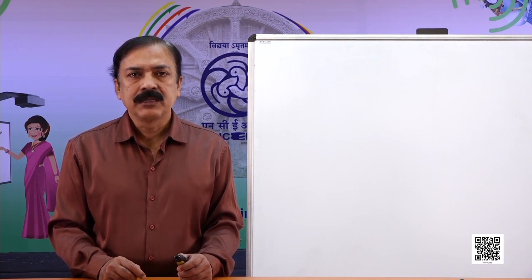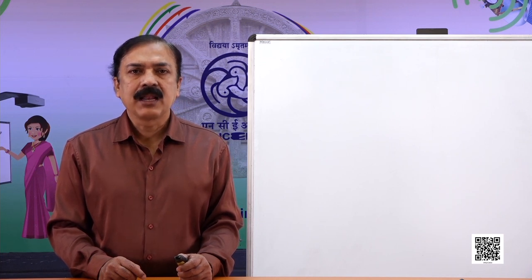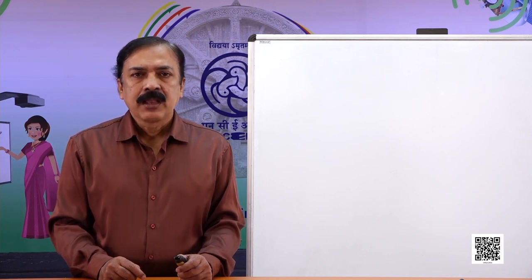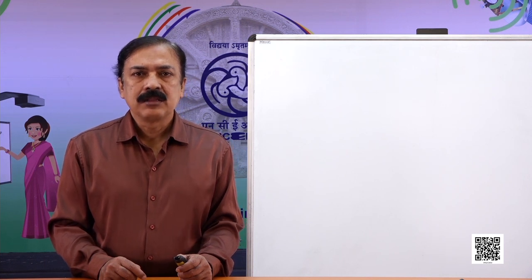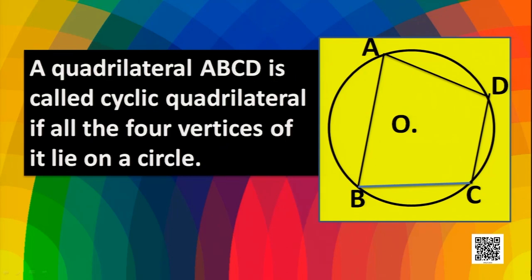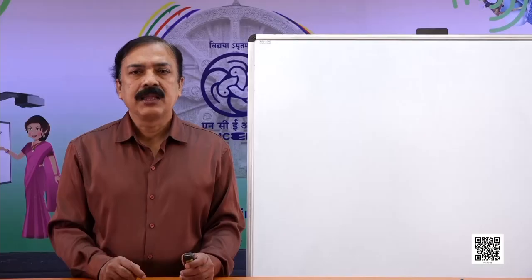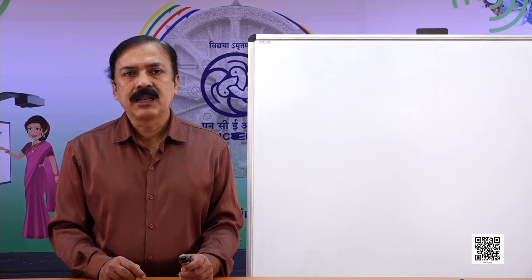So let us understand what a cyclic quadrilateral is. Cyclic means on the circle. A quadrilateral ABCD is called a cyclic quadrilateral if all four vertices of it lie on a circle. In the figure, ABCD is a quadrilateral and the vertices A, B, C and D lie on the same circle. So we can say that ABCD is a cyclic quadrilateral.